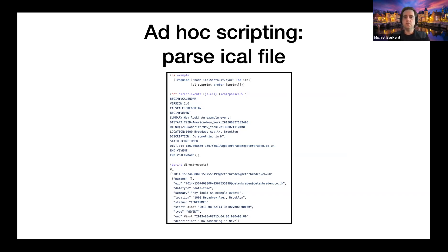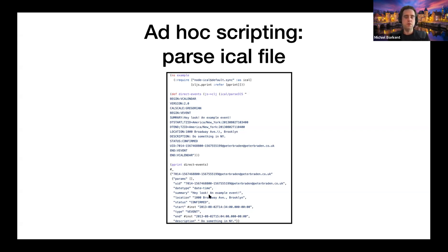By 'ad hoc scripting' I just mean: I have a thought, I want to do something, I can grab this tool and write a script and immediately execute it without thinking too much about setup. Here's an example using node-ical to convert an ical file to ClojureScript data. If you can find a good library for something on npm, NBB might be a great tool to try. You'll see some dollar-sign-with-default syntax — I'll explain that later in the presentation.